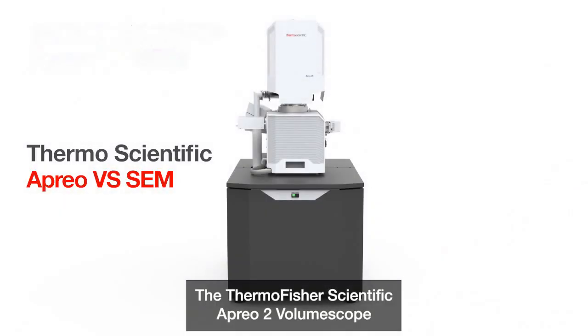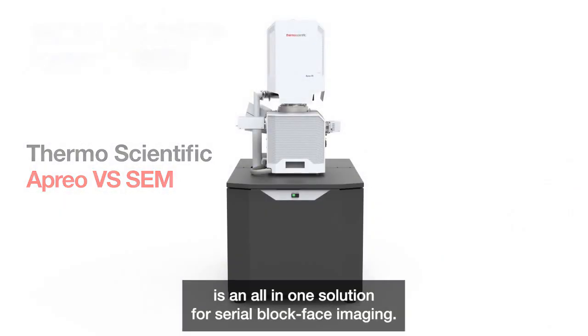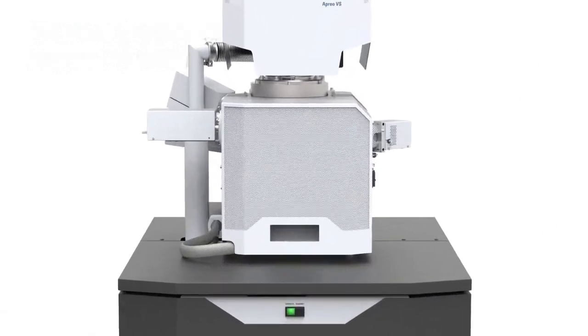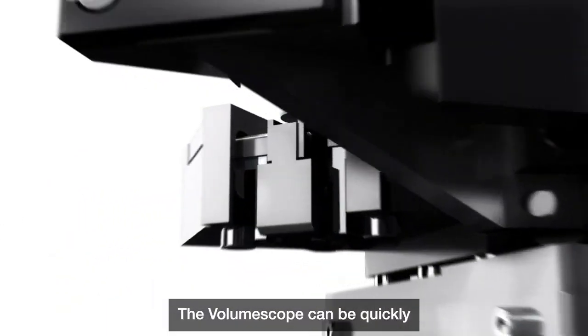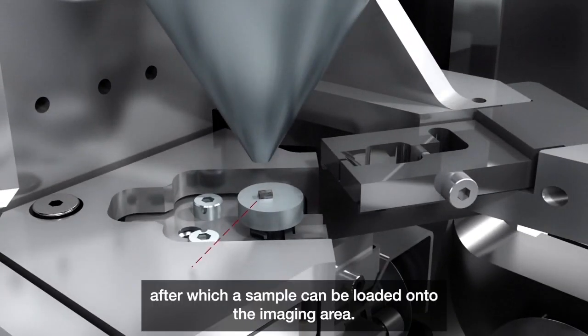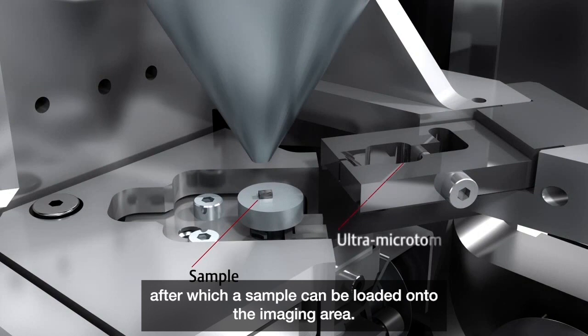The Thermo Fisher Scientific Aprio II Volume Scope is an all-in-one solution for Serial Block-Face Imaging. The Volume Scope can be quickly mounted on the stage inside the microscope, after which a sample can be loaded onto the imaging area.